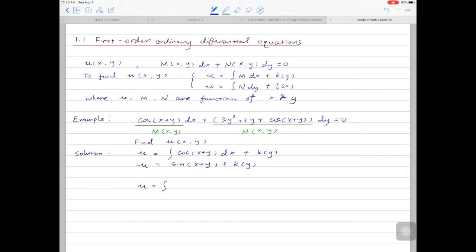Now, looking at the second expression, we have u equals to integral of 3y square plus 2y plus cos(x+y)dy, then plus l(x). Integrating 3y square is simply y cube, then integrating 2y is simply y square. Again, when integrating cos(x+y), we view x as a constant. So, what we have is sin(x+y), then carry down the l(x).